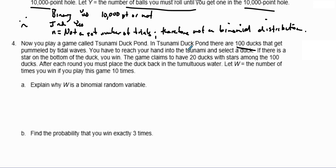Now you play a game called Tsunami Duck Pond. There are 100 ducks that get pummeled by tidal waves. You have to reach your hand into the tsunami and select a duck. If there is a star at the bottom of the duck, you win. The game claims to have 20 ducks with stars among 100 ducks. After each round, you must place the duck back in the water. Let W be the number of times you win if you play this game 10 times. Explain why W is a binomial random variable.